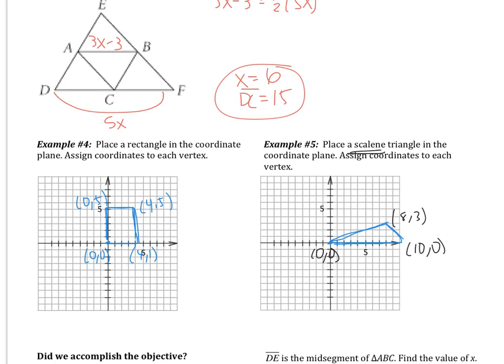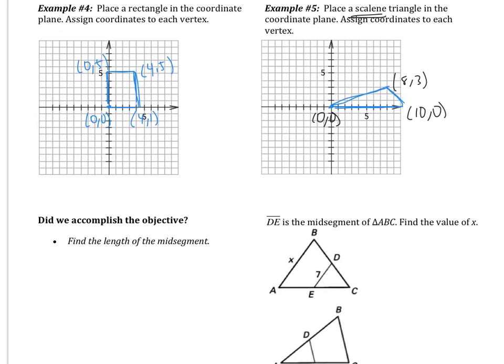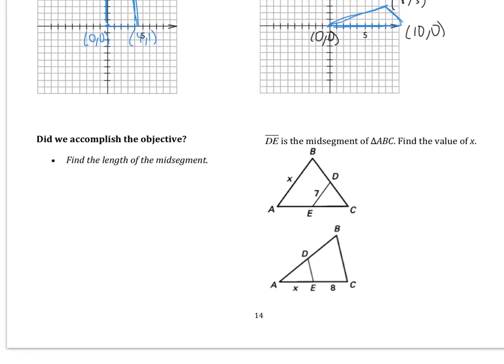Second semester, we're going to do more coordinate proofs like this that are more difficult. But for right now, all you're doing is placing figures. Now remember that these are not the only answers you could have had for 4 and 5. This is not the only rectangle, and this is not the only scalene triangle. So when we do these in class, a lot of times you're going to come up with answers that are different than mine.